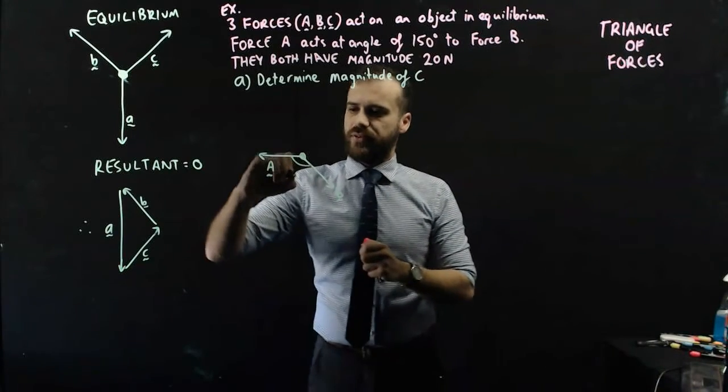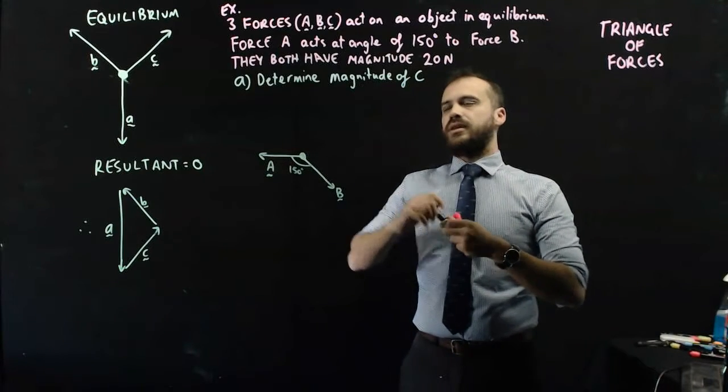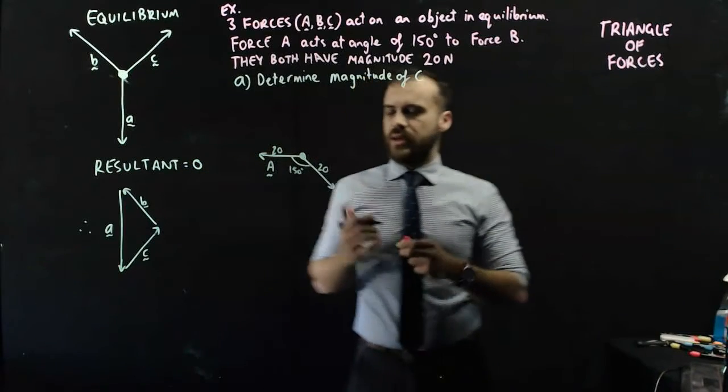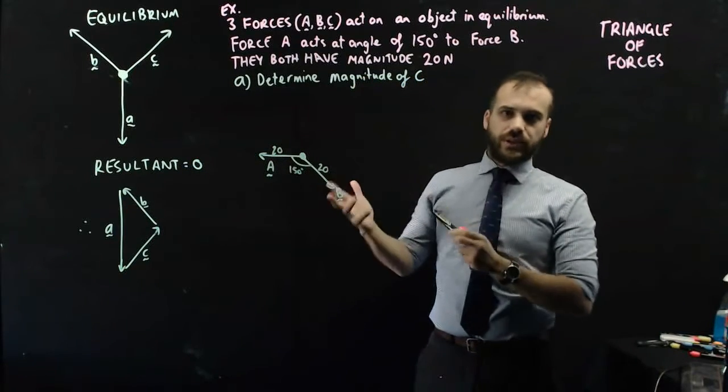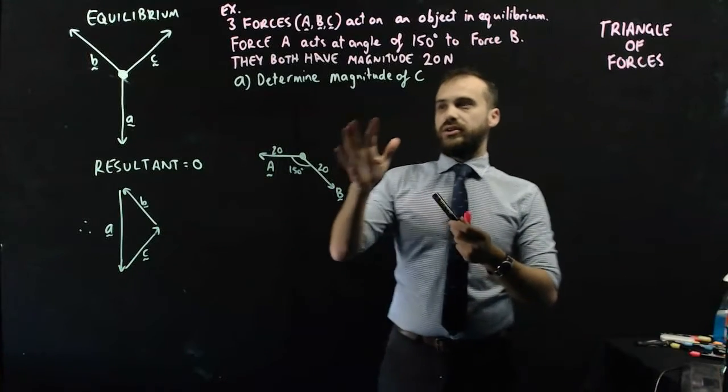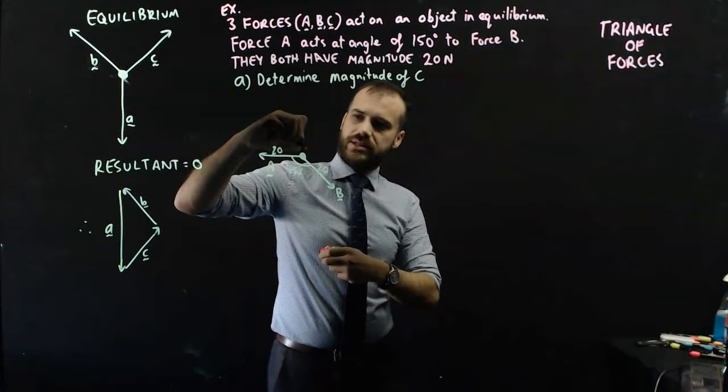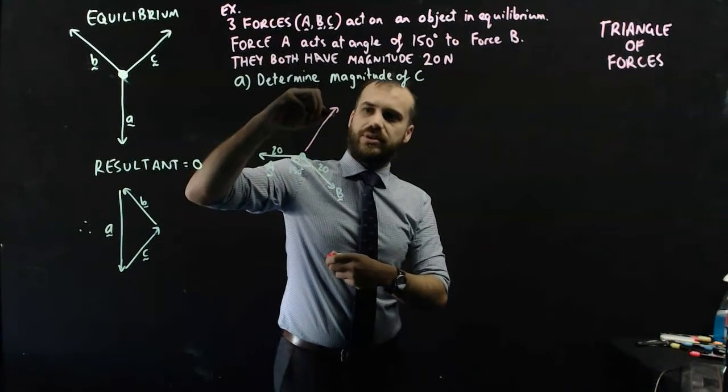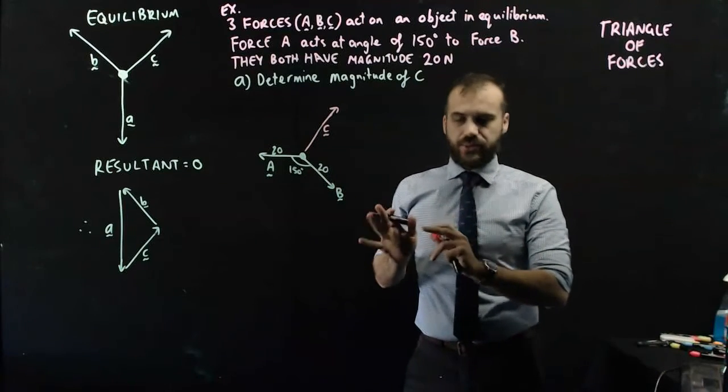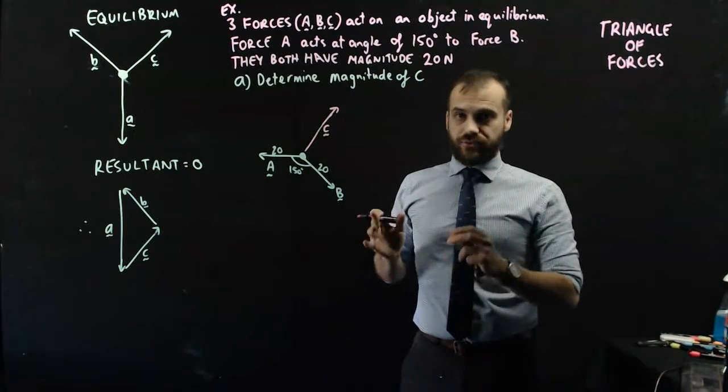Does that mean 150 degrees this way or 150 degrees that way? It's unclear from the question, but it's actually not going to matter for the question. So I'm just going to work that way and say that 150 degrees here. They both have magnitude 20 newtons, so I know the length of that is 20, and I know the length of that is 20. If these things are in equilibrium, there must be some other third force acting on it, because otherwise it's just going to kind of drag in that direction. And that third force must look like this-ish. Determine magnitude of C. How do I do it? I draw a triangle of forces.